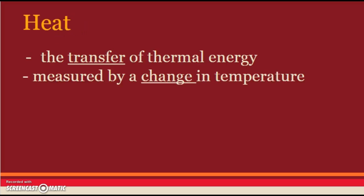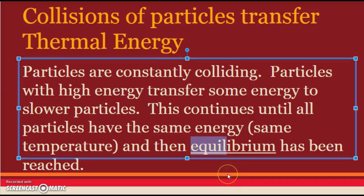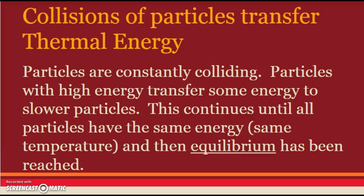Heat is measured by a change in temperature. Collisions of particles transfer thermal energy — particles are constantly colliding because they're moving, so they're bumping into each other. Particles with high energy transfer some energy to slower particles. This continues until all the particles have the same energy and therefore the same temperature, and then equilibrium has been reached. 'Equilibrium' contains the word 'equal' — when everything has the same amount of energy, it's the same temperature.